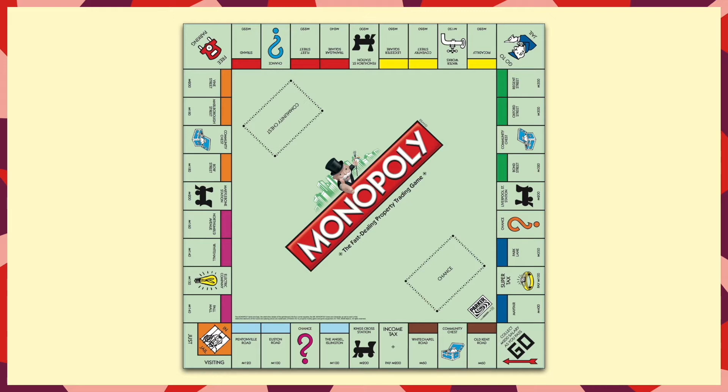The properties are divided into eight sets as well as railroads and utilities, and as you go around the board the properties get more expensive but you also receive higher rent if another player lands on them. Our goal is to work out which property set is best.